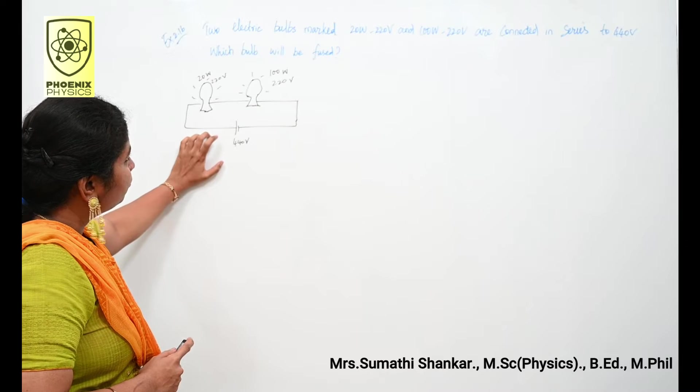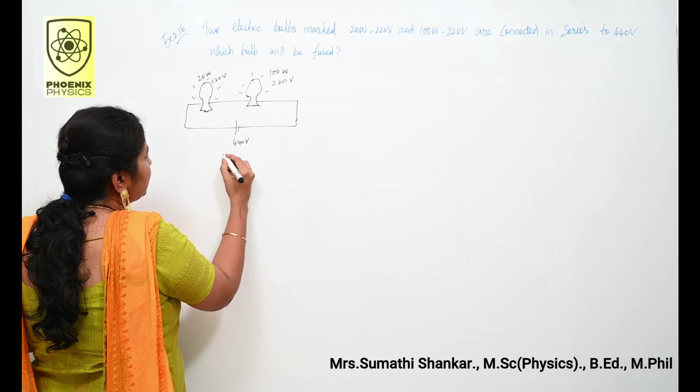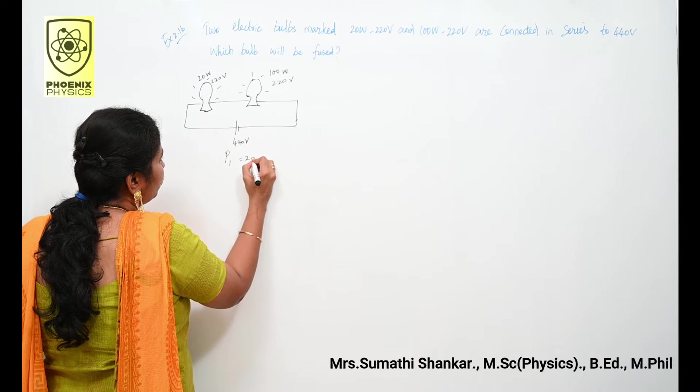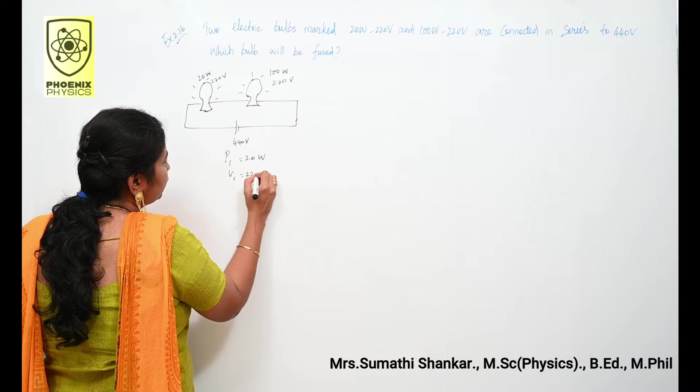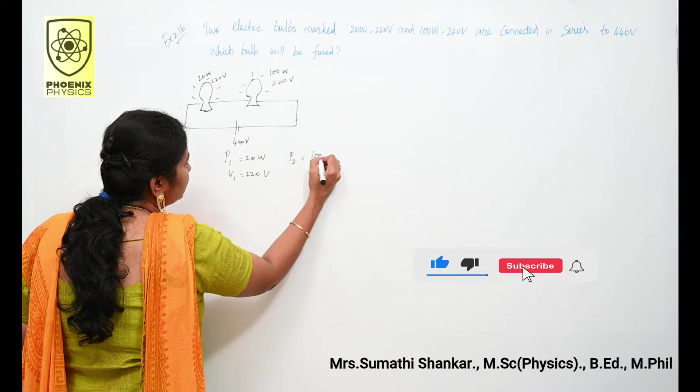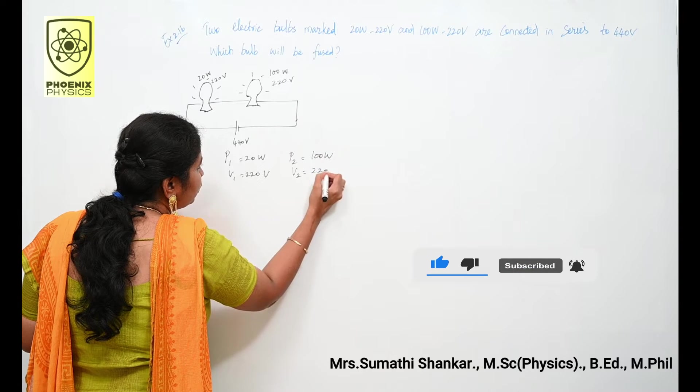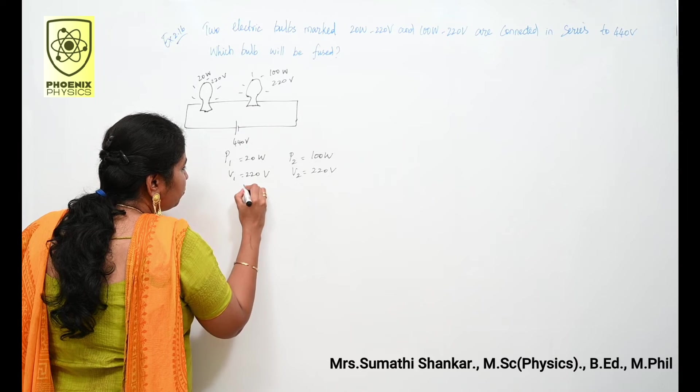What is given? P1 is equal to 20 watt, V1 is equal to 220 volt. Same way, P2 is equal to 100 watt, then V2 is equal to 220 volt.